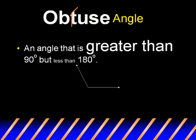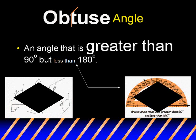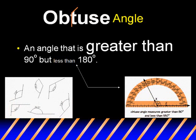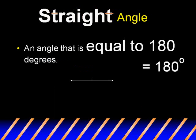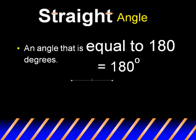An obtuse angle is an angle that is greater than 90 degrees but less than 180 degrees. A straight angle is an angle that is exactly equal to 180 degrees.